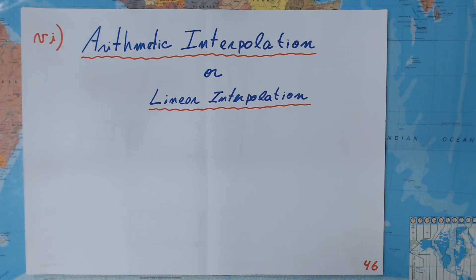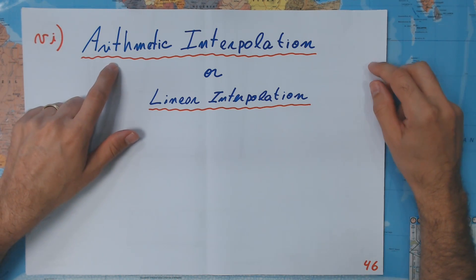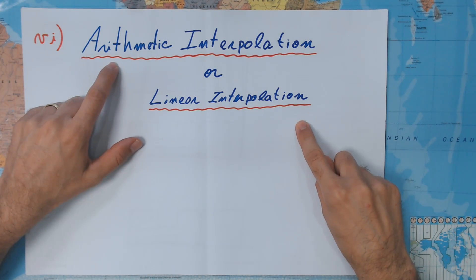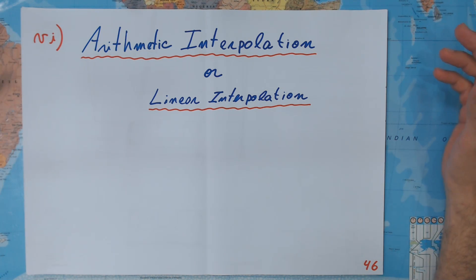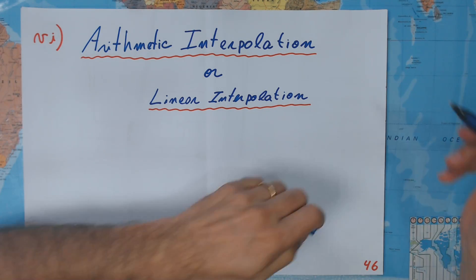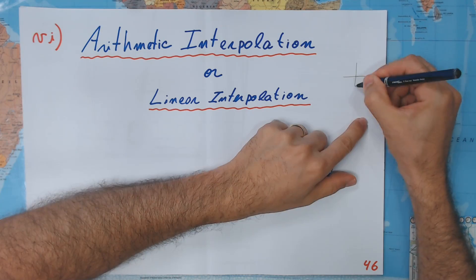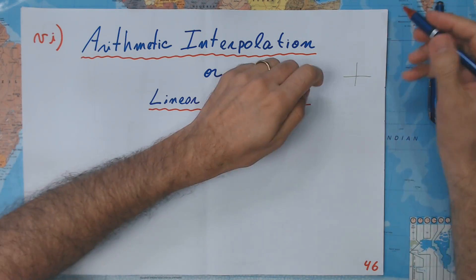Hello and welcome back. Now let's see our last part of arithmetic progression. It is going to be called interpolation — we can also call it arithmetic interpolation or just linear interpolation, because when you are discussing arithmetic progression, it is linear. If you just plot it, your terms are always going to fall on a line.